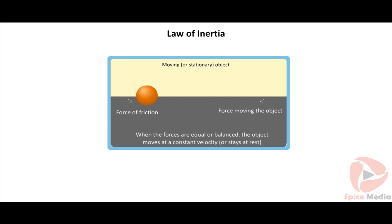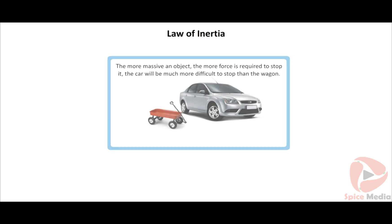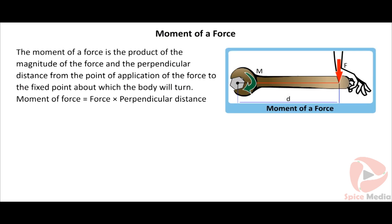The ball will never stop as it rolls on a frictionless floor. Thus, a body continues to be in uniform motion unless acted upon by external force. The first law states that all objects have inertia. The more mass an object has, the more inertia it has, and the harder it is to change its motion or make it move. We can define moment of a force as a product of the magnitude of the force and the perpendicular distance from the point of application of the force to the fixed point about which the body will turn.